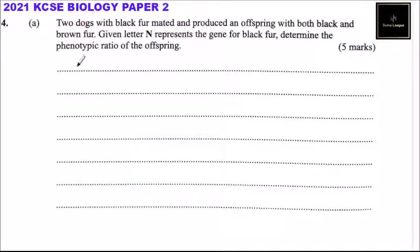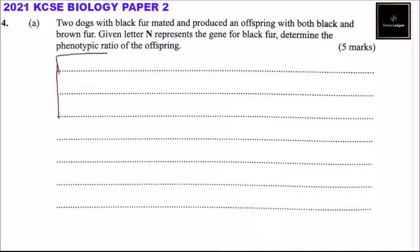The genes are the ones that produce a trait. We can use a diagram here — we can use a table to demonstrate that. So you can draw a table like that.